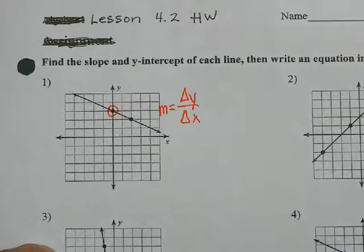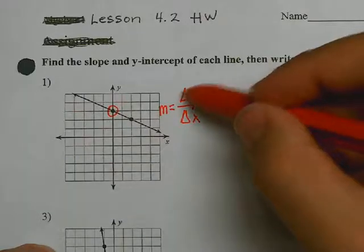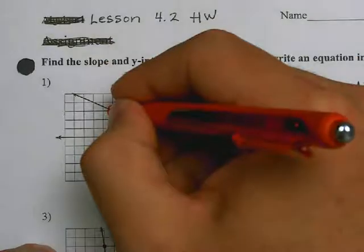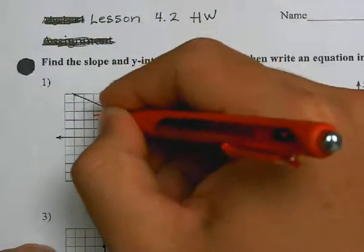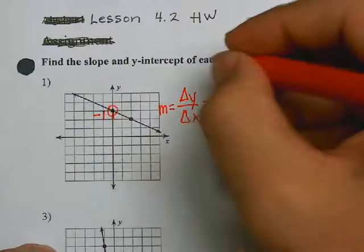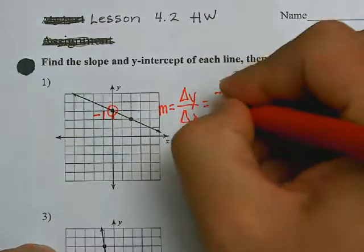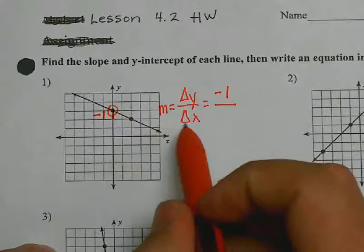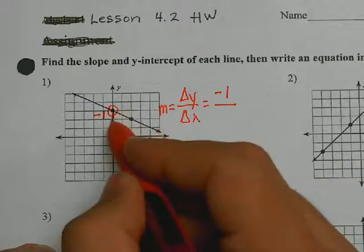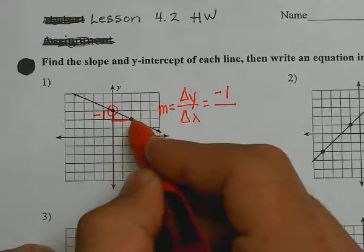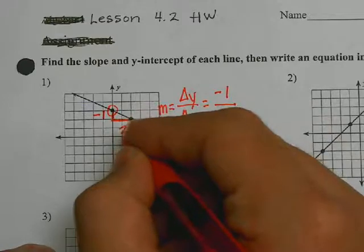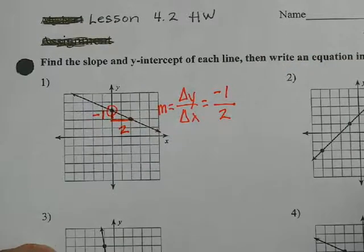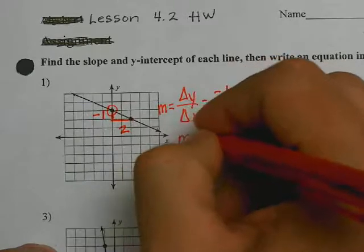Once I do that, I ask myself how do I have to change vertically to get to this point? I would go down one. Down one would be negative one, because down on the y-axis is negative. So, negative one over — and then how do I change horizontally to get to that point? I'm going to go right two times. So, I'll write two, which is a positive two. Now I have negative one over two, which would be m equals negative one-half.